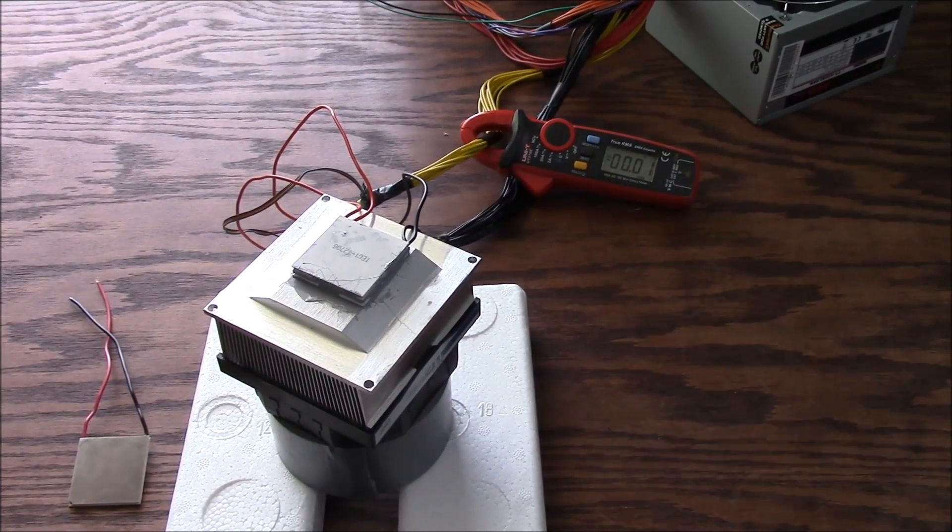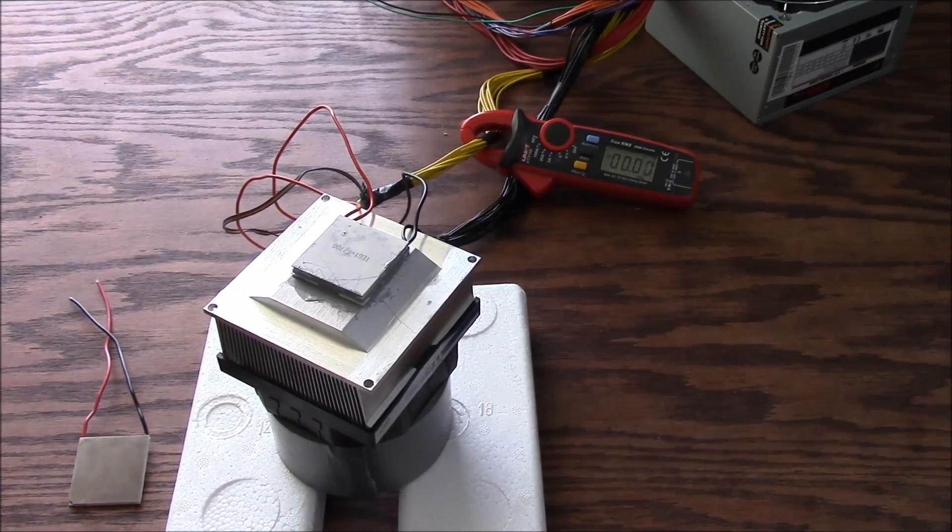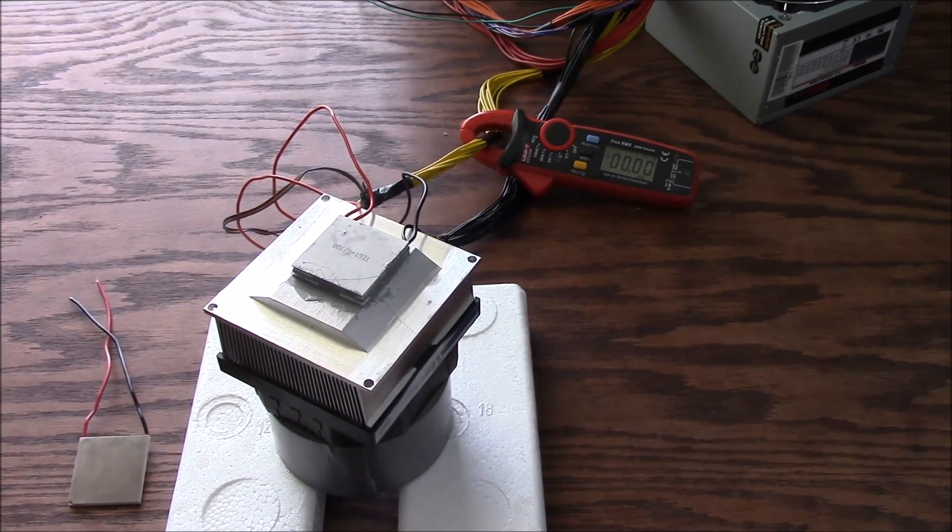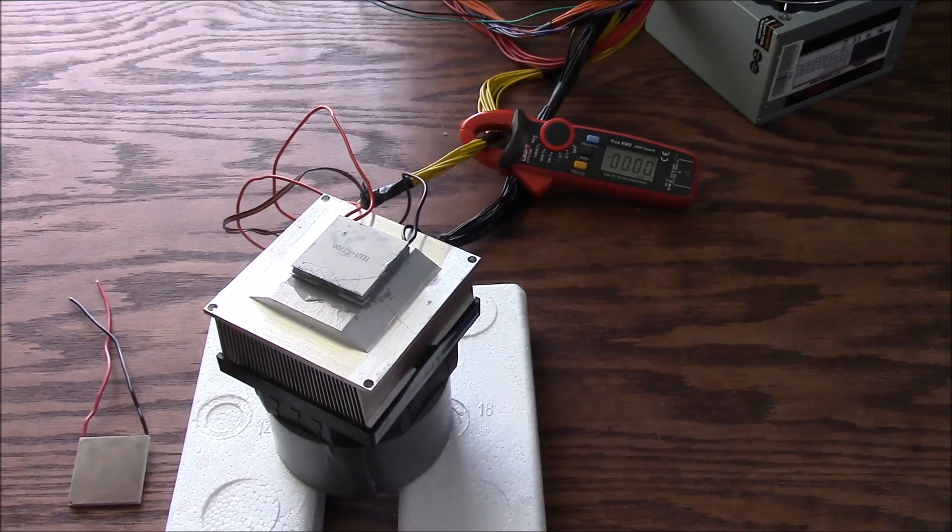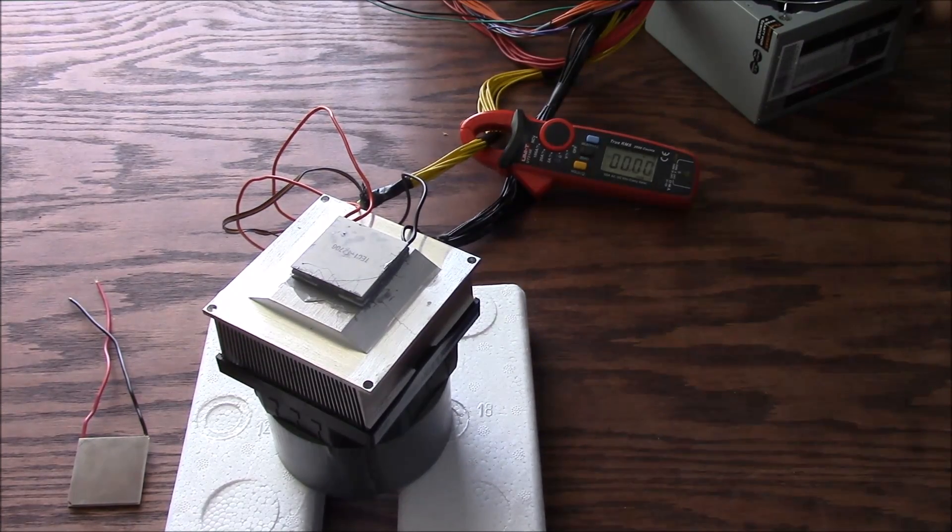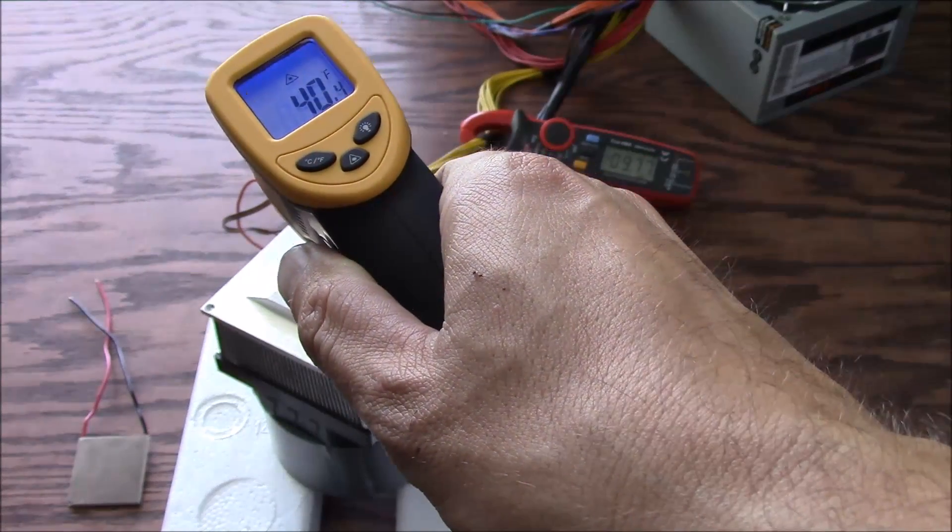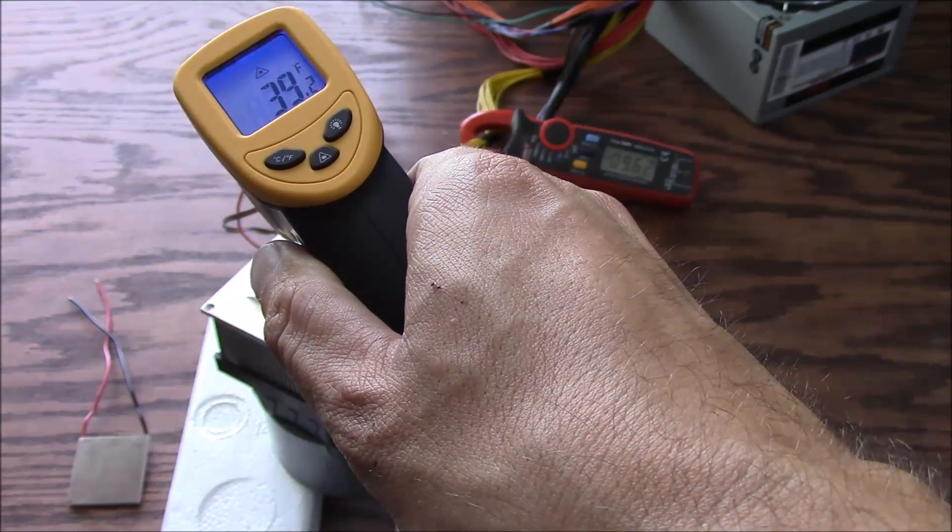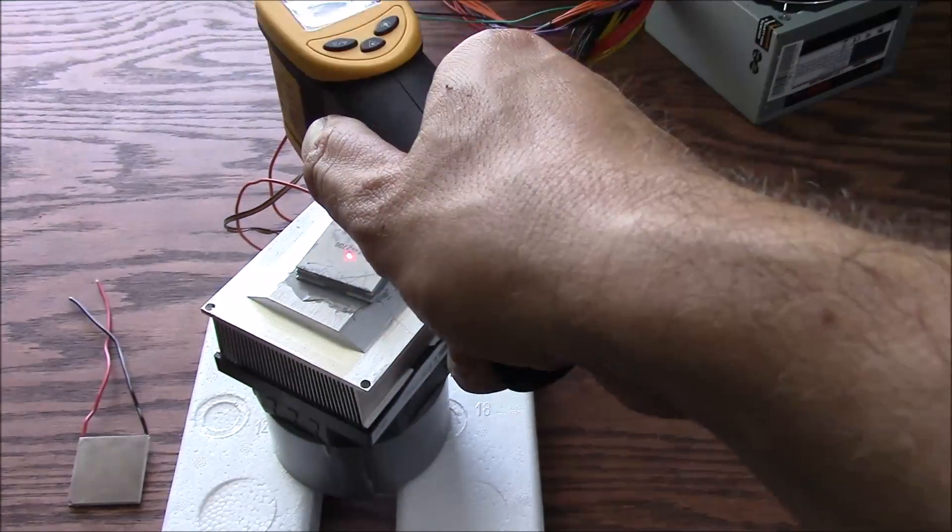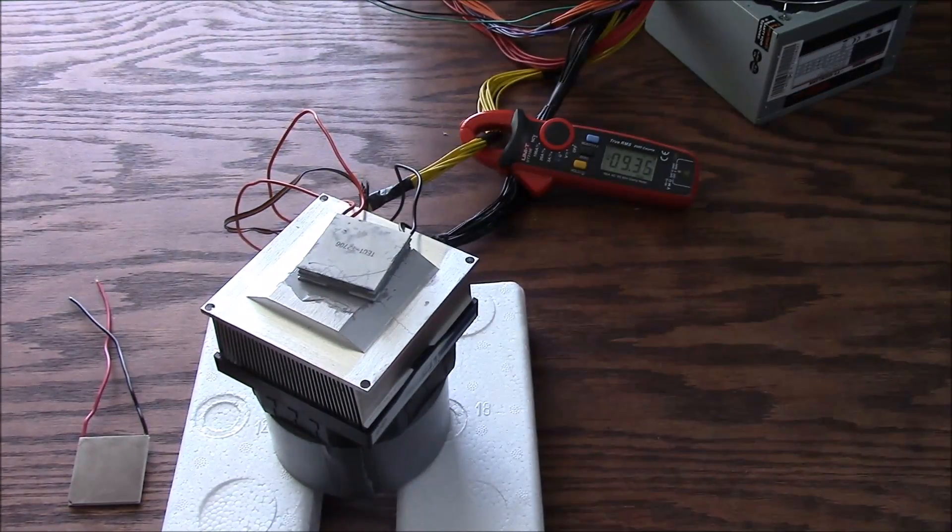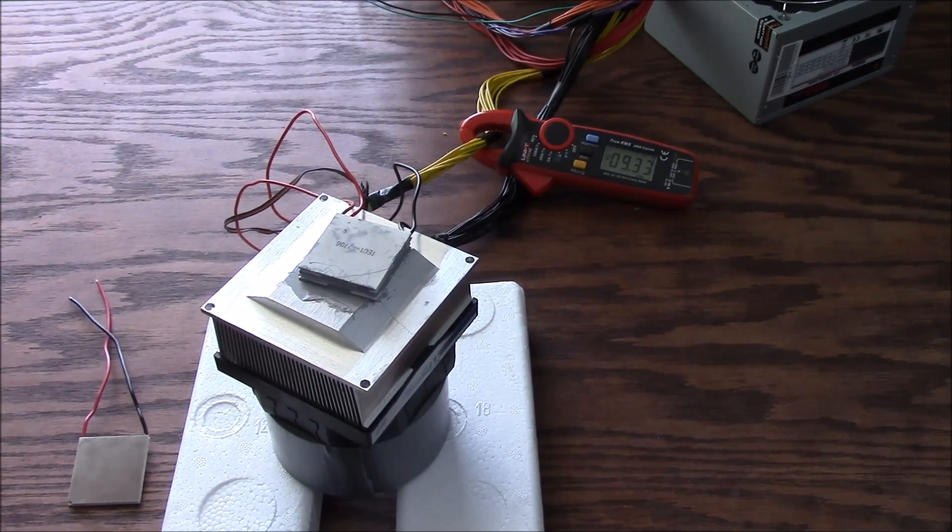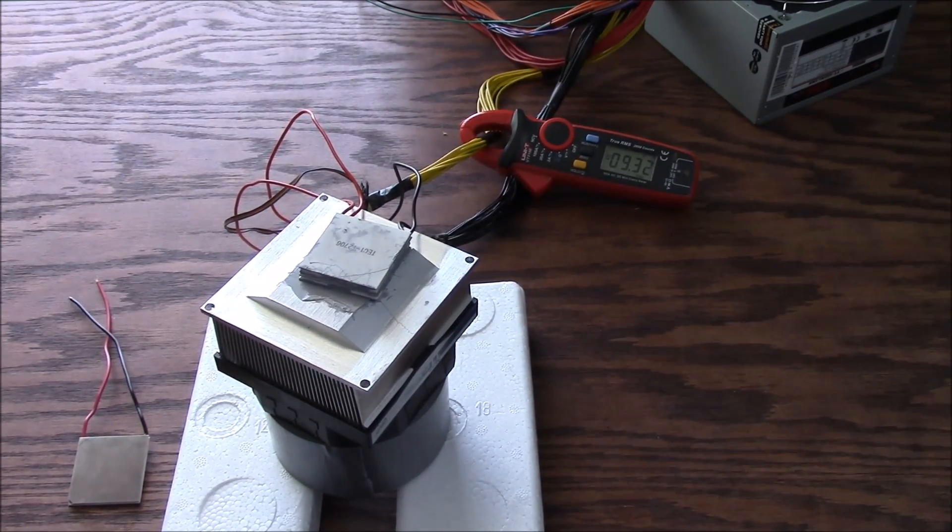I'm going to go ahead and turn on the power supply and immediately start taking readings. Like I said, the coldest reading will be the reading that we use. So I'll just go until it stabilizes or starts creeping back up. So here we go. Okay, 33 is going to be it. And 9 and a half amps is the current draw. So let's get this cleaned up and switch to the 10 amp unit.